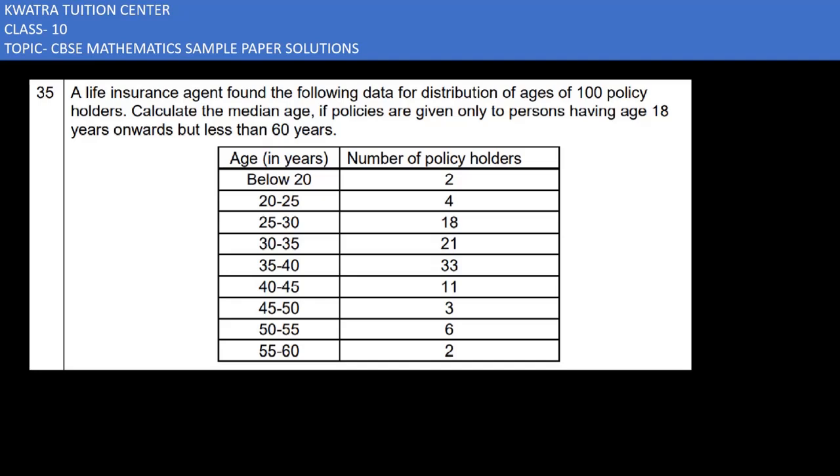Let's start with question number 35. A life insurance agent found the following data for distribution of ages of 100 policyholders. Calculate the median age if policies are given only to persons having age 18 years onwards but less than 60 years.